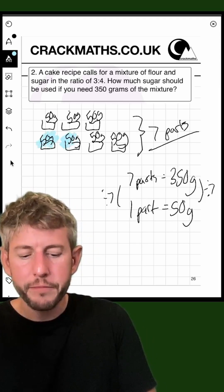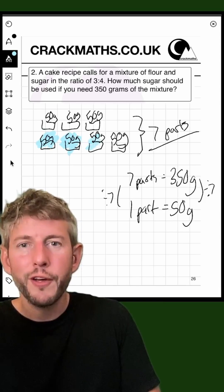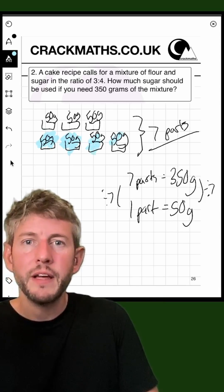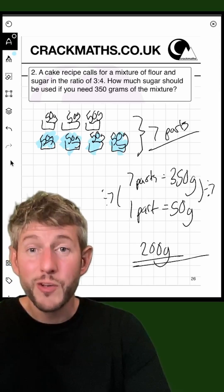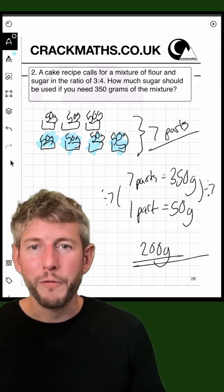So one part was 50, two parts takes us to 100, three parts is 150, and four parts is 200. So we want 200 grams of sugar.